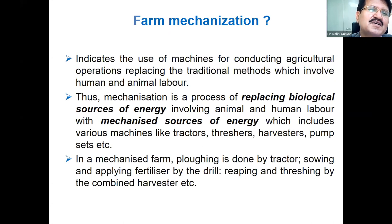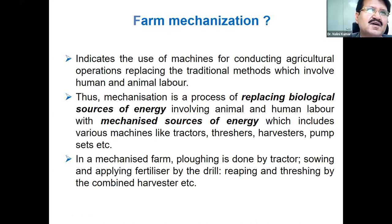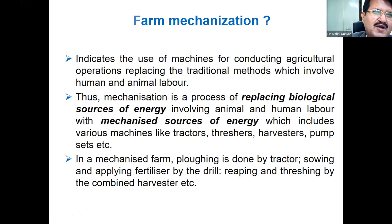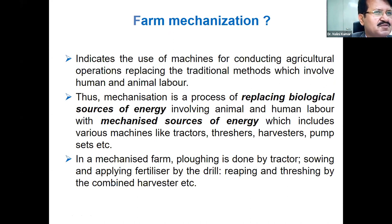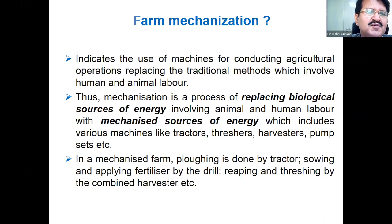Farm mechanization is nothing but using mechanical labor in place of traditional human and animal or draft labor. In mechanization, plowing operations are done by tractor, sowing fertilizer by drill, reaping and threshing by combined harvester, etc. Whereas in traditional agriculture, we use animal or draft sources of power. Mechanization is a process of replacing biological sources of energy with mechanized sources of energy.